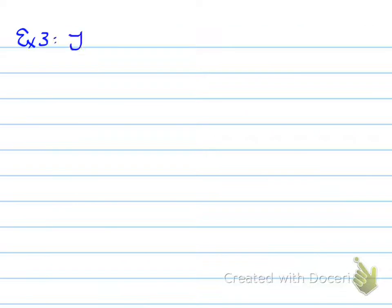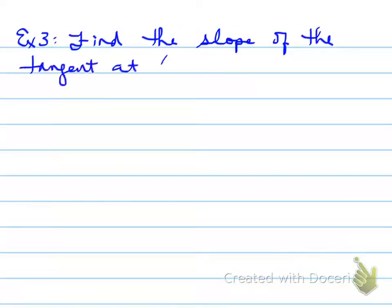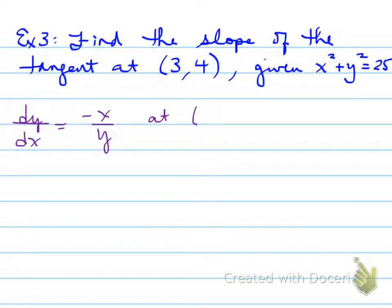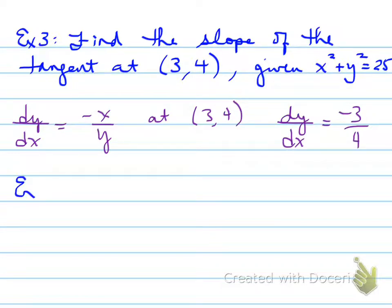Let's look at another problem. Example number 3: find the slope of the tangent at the point (3, 4) given the circle. We want to find the slope of the tangent at a point on the circle. If we plug in (3, 4), that gives us 25. We already found the derivative of that circle — it's negative x over y — and we plug in the point (3, 4): x equals 3, y equals 4, and we find that dy/dx is negative 3 over 4. So that is the slope of the tangent at that point.